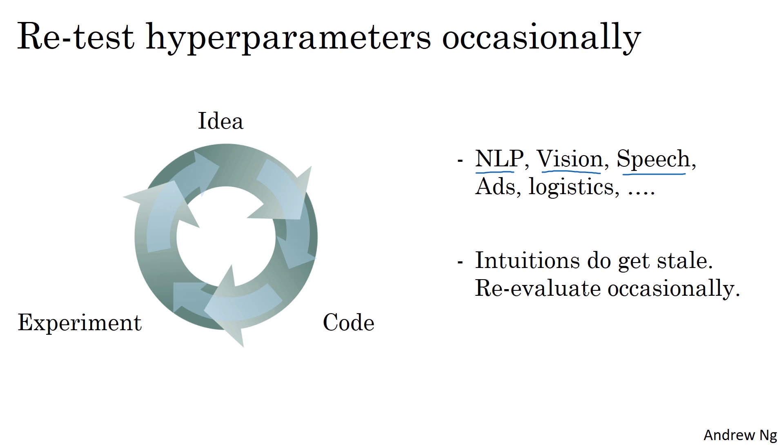So even if you work on just one problem, say logistics, you might have found a good setting for the hyperparameters and kept on developing your algorithm, or maybe seeing your data gradually change over the course of several months, or maybe just upgraded the servers in your data center. And because of those changes, the best setting of your hyperparameters can get stale. So I recommend maybe just retesting or re-evaluating your hyperparameters at least once every several months to make sure that you're still happy with the values you have.